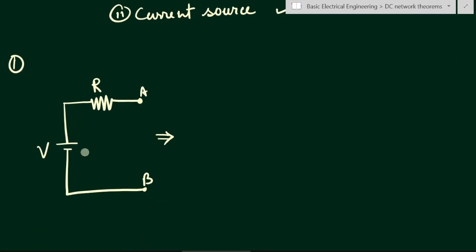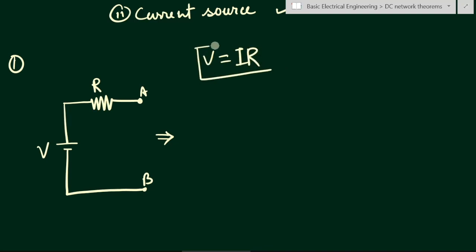In the first type, we have a voltage source with voltage V and a resistance in series. To convert it to a current source, we will use Ohm's law, which states that V = IR. From here we can write I = V/R.